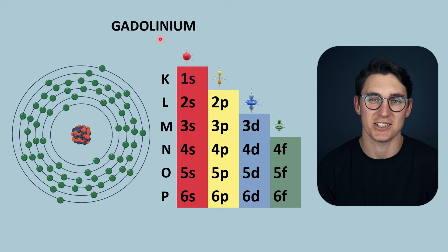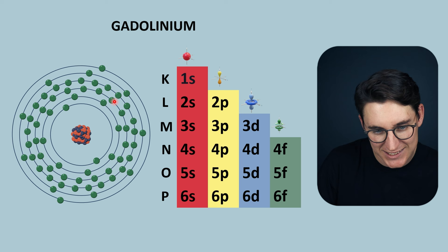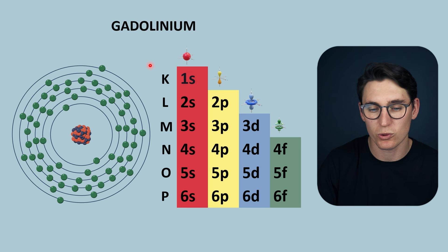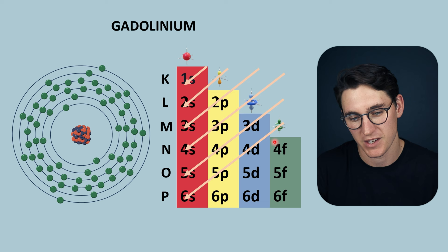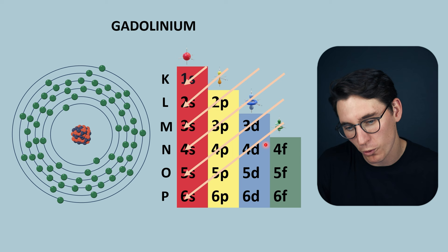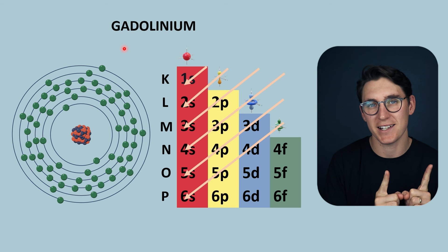Why does gadolinium drastically shorten T1 times? It's a unique atom in the way that its electrons are configured. Six electron shells are filled within the gadolinium atom, and we don't fill shells sequentially from the first shell all the way out to the sixth. There's a rule called Hund's rule, which dictates the order in which we fill electron orbitals. Certain orbitals within the fifth and sixth shell are filled with electron pairs prior to the 4f orbital — an orbital within the fourth shell — being filled with electrons. The 4f orbital in gadolinium, because of the number of electrons it has, will have seven unpaired electrons, the maximum number of unpaired electrons that are able to be within a shell.